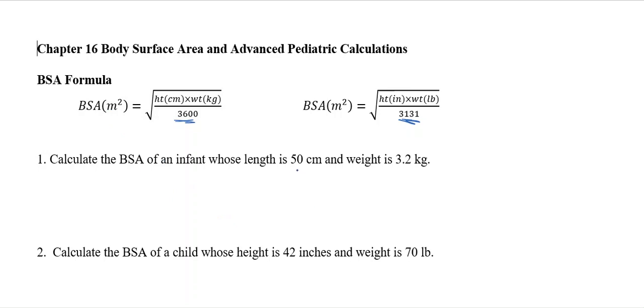So in this first example, we have to calculate the BSA of an infant whose length is 50 centimeters and whose weight is 3.2 kilograms. So since I'm in centimeters and kilograms, I'm going to use the BSA for the metrics. So it's always meter squared. And I'm going to put in 50 times 3.2, divide that by 3,600. This is all supposed to be under the square root.